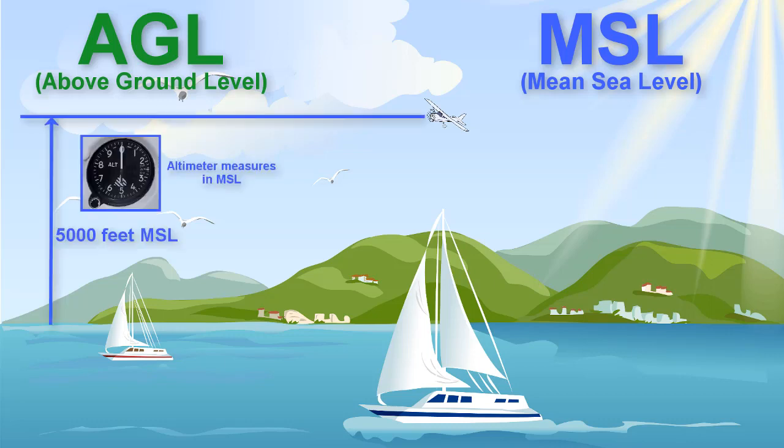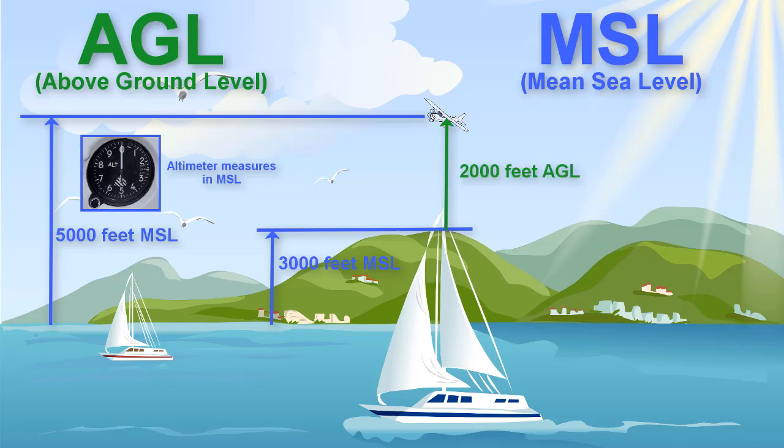For example, let's say you are flying at 5,000 feet MSL. This means you are flying 5,000 feet above the ocean surface. However, if you are flying over this mountain, which stands at 3,000 feet above the ocean surface, you will be flying 2,000 feet above ground level, or AGL.